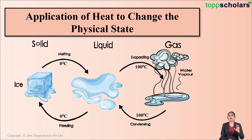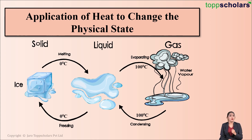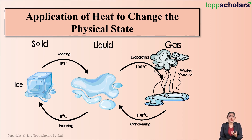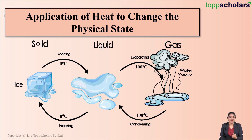Let's take an example of water. If you take water and keep it in the freezer for some hours, it gets converted into ice. So water exists as ice in the solid state. Now, if you remove this ice from the freezer and keep it at room temperature, the ice starts melting and gets converted into water — that is, the liquid state. Because of the surrounding heat, this ice starts melting and gets converted into the liquid state. This process is called melting, and the temperature at which ice starts melting is 0 degree Celsius. So the melting point of ice is 0 degree Celsius.